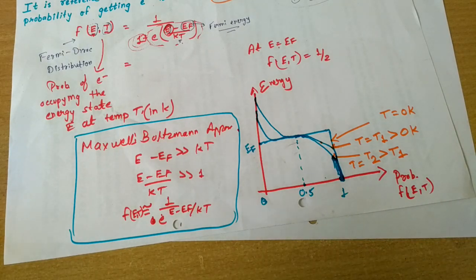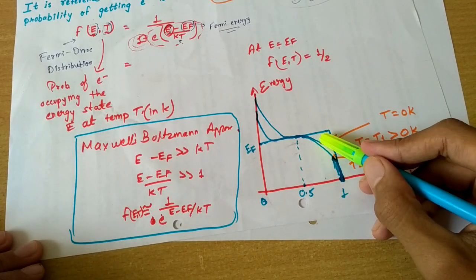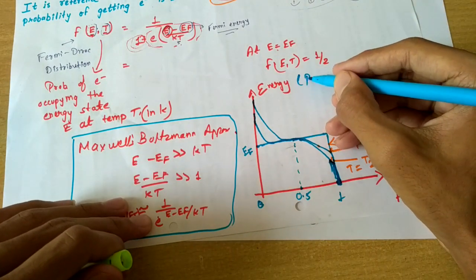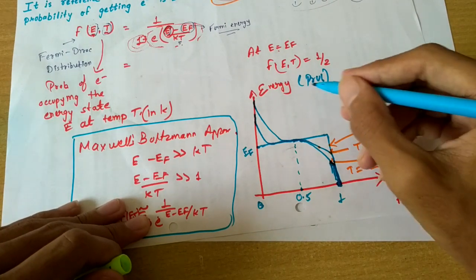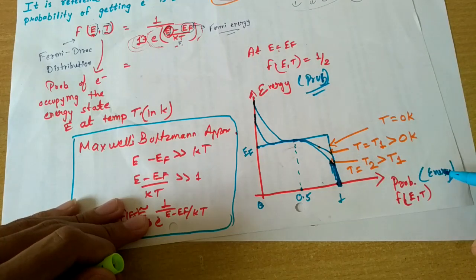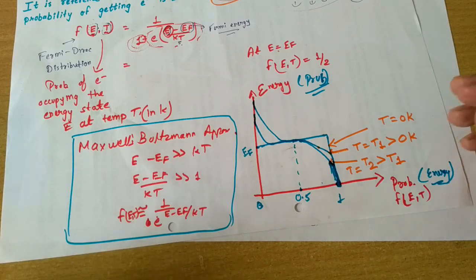From the next video we will be starting with the conduction band effective mass relation, the number of electrons in the conduction band Nc, Nv, and other topics in thorough detail. Please understand this graph carefully. You can also try plotting probability on the x-axis and energy on the y-axis — that may be easier to understand. If you have any confusion, please let me know in the comment section.